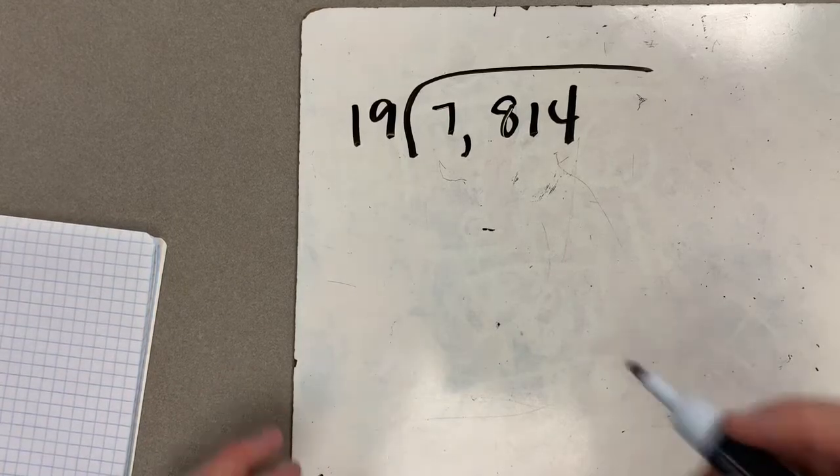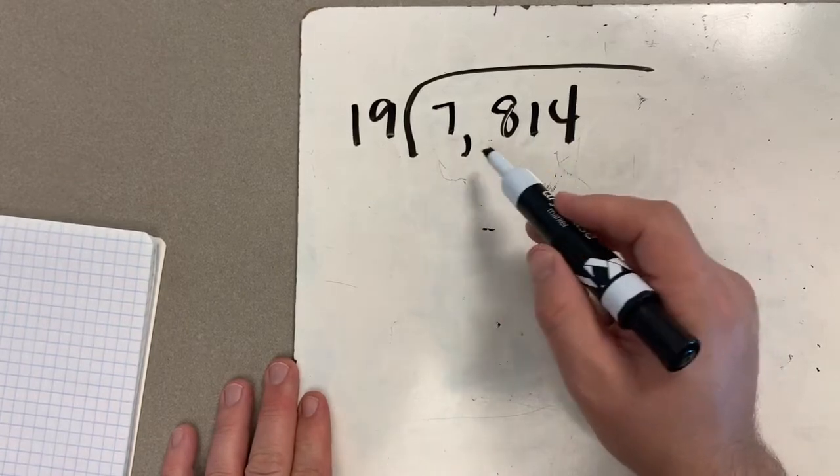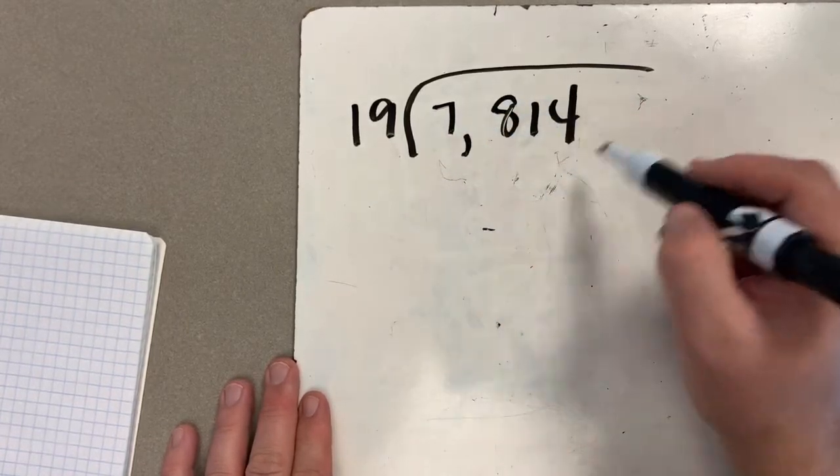All right, our next one is 7,814 divided by 19. Again, this is our dividend, sorry, this is the big thing we're going to break into equal size groups.